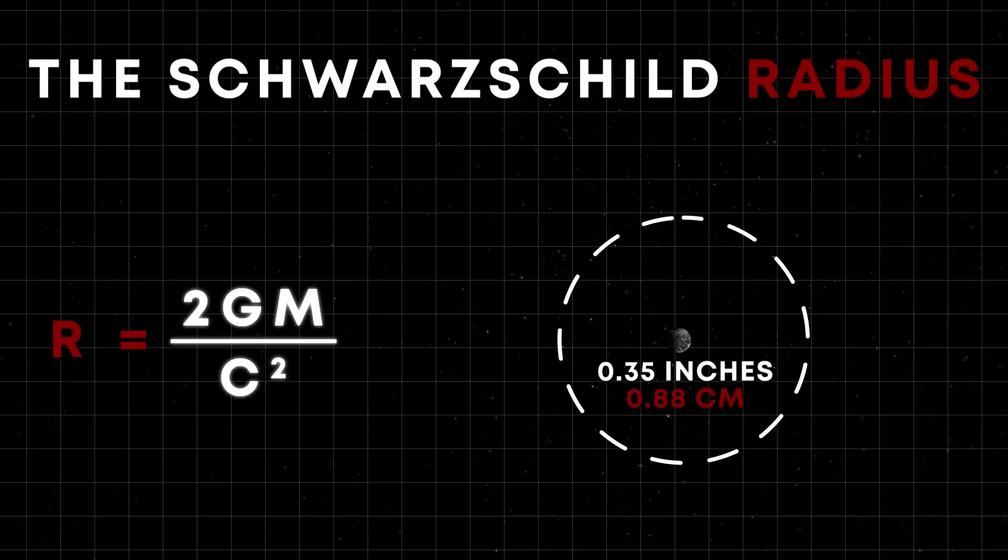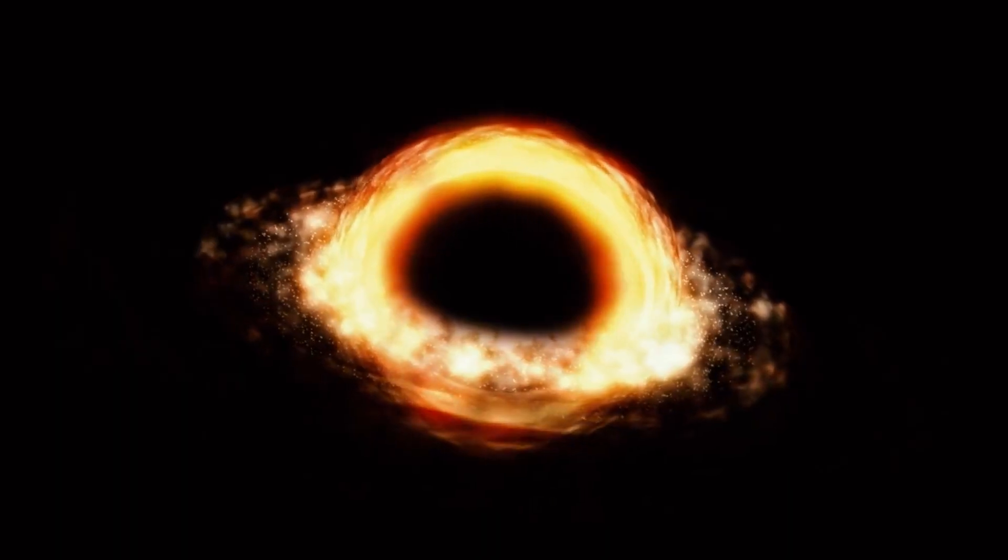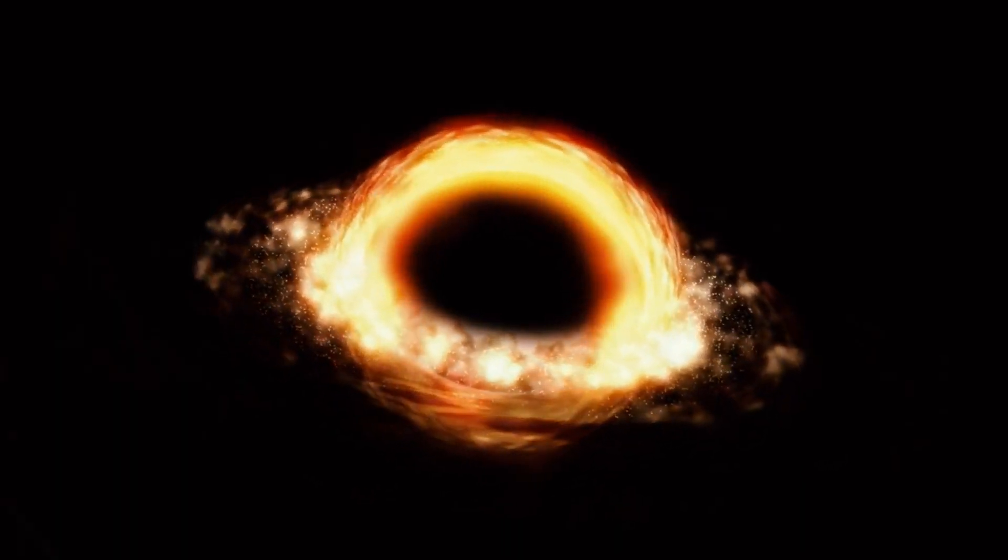Over time, little specks of dust start to squeeze tighter and tighter, eventually reaching a point where their combined mass and gravity grow so intense, space around them starts to compress. And this creates an event horizon, a kind of boundary that lets things in but doesn't really allow anything to get out. This type of black hole is called a Schwarzschild black hole.